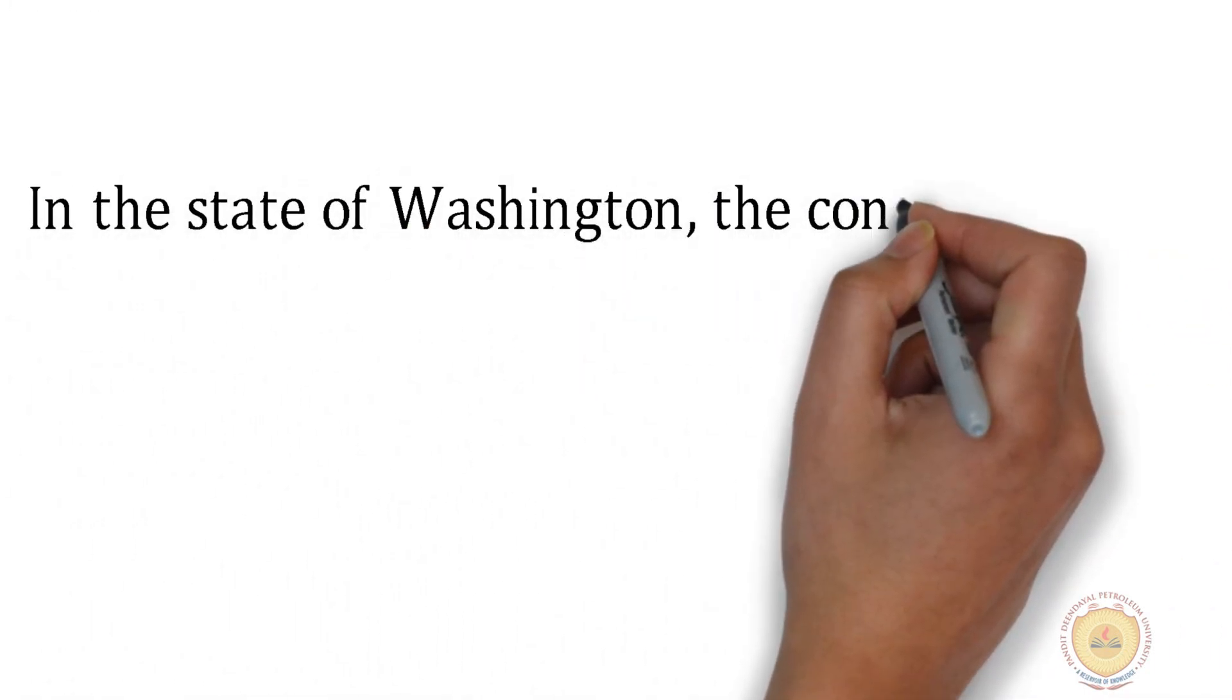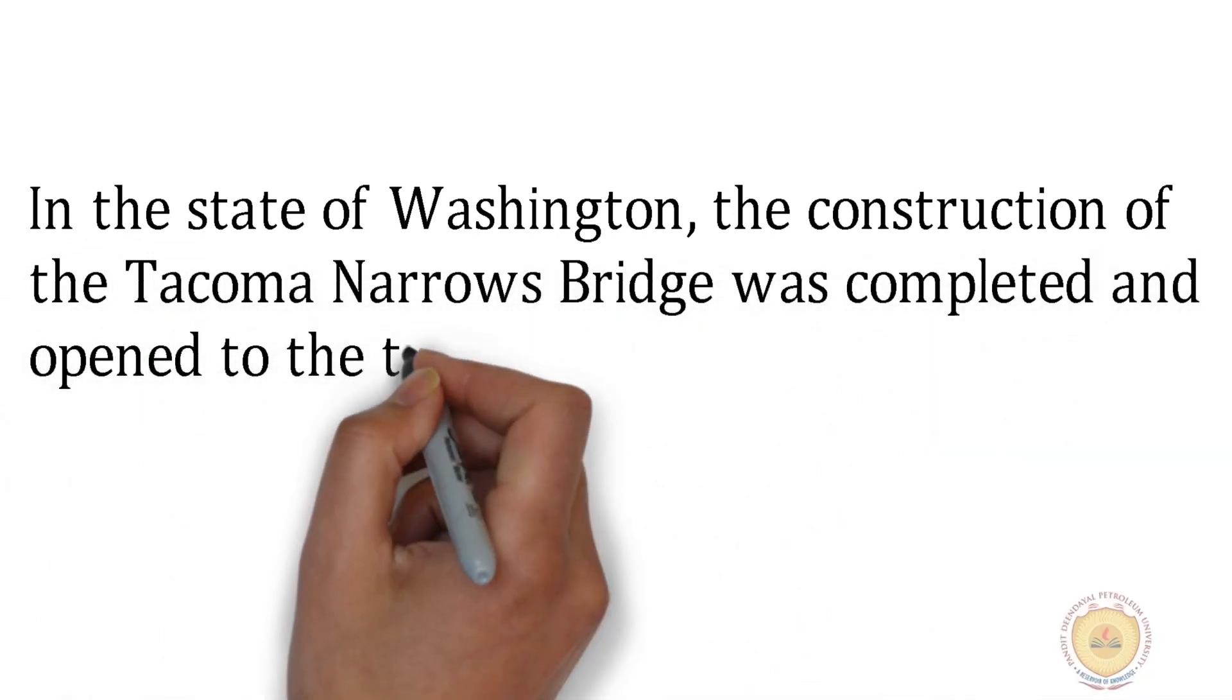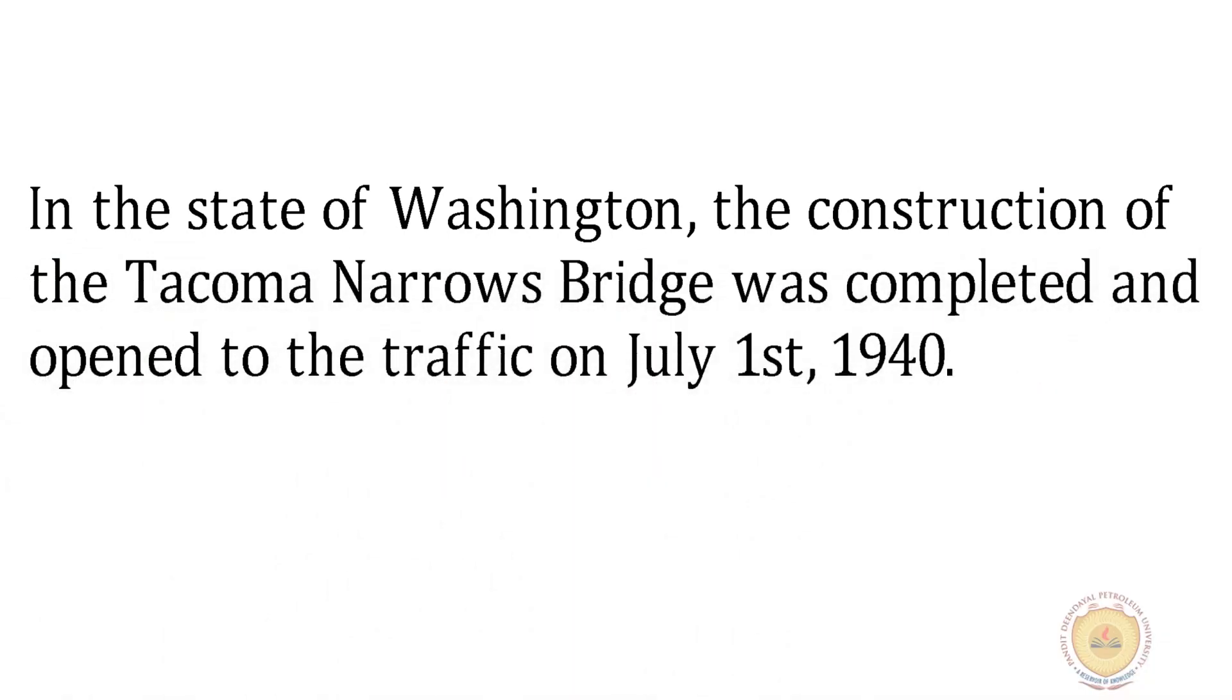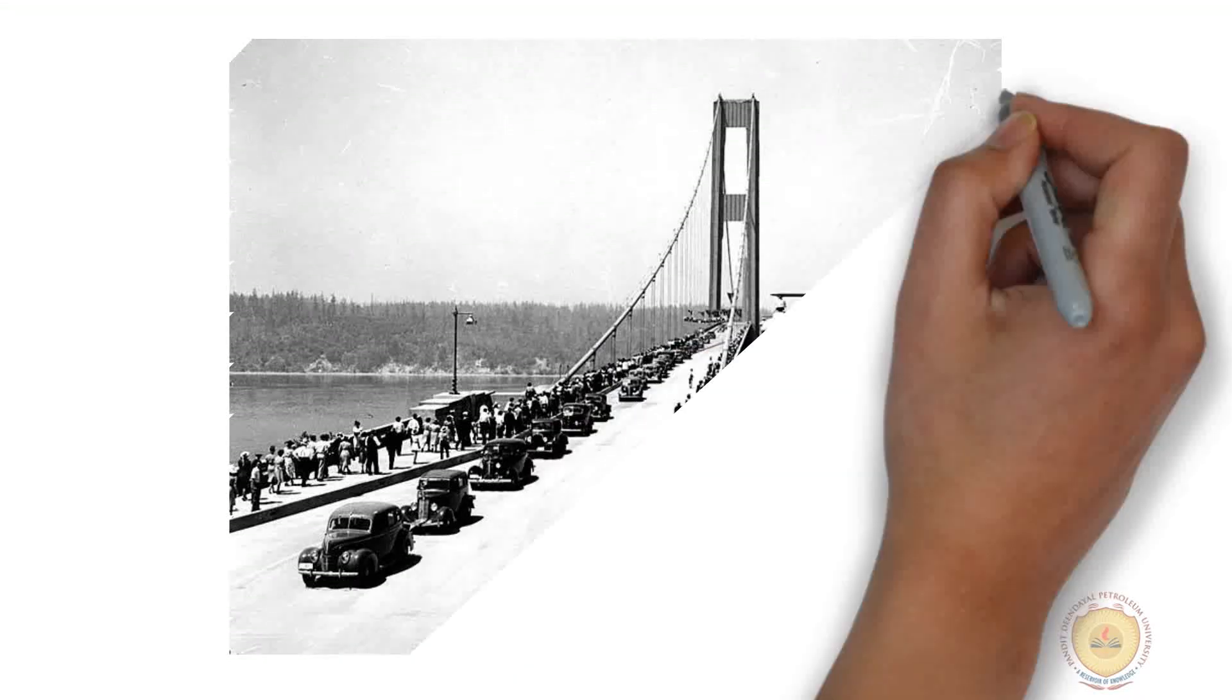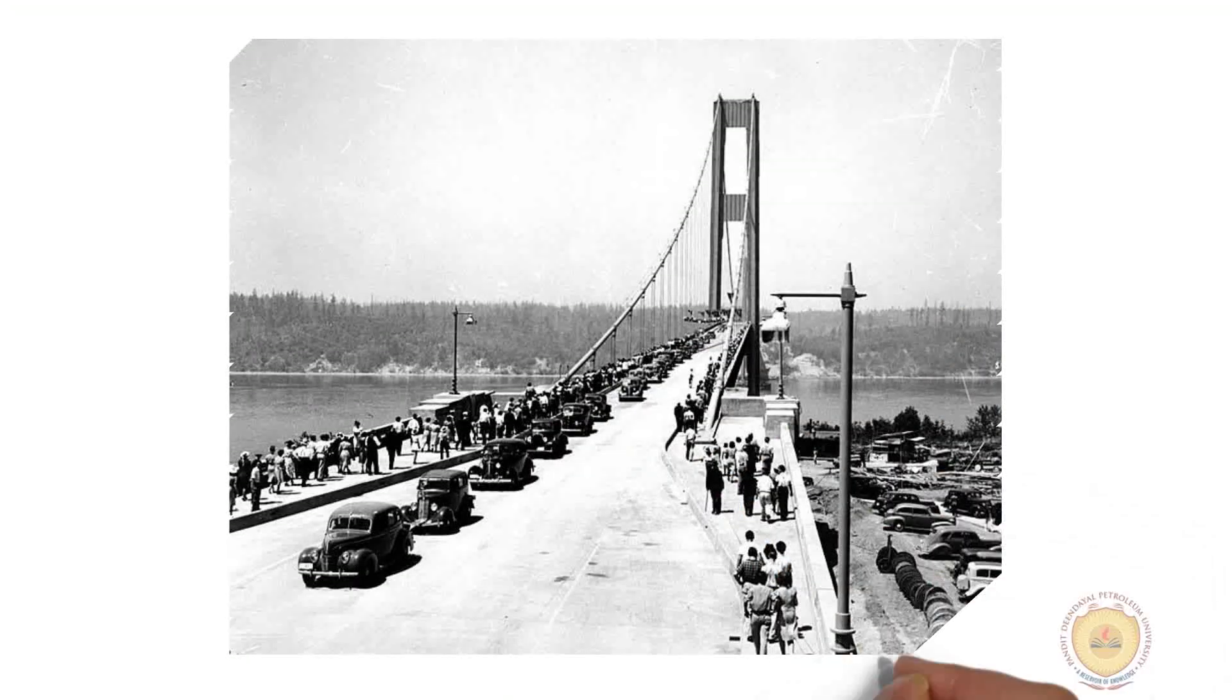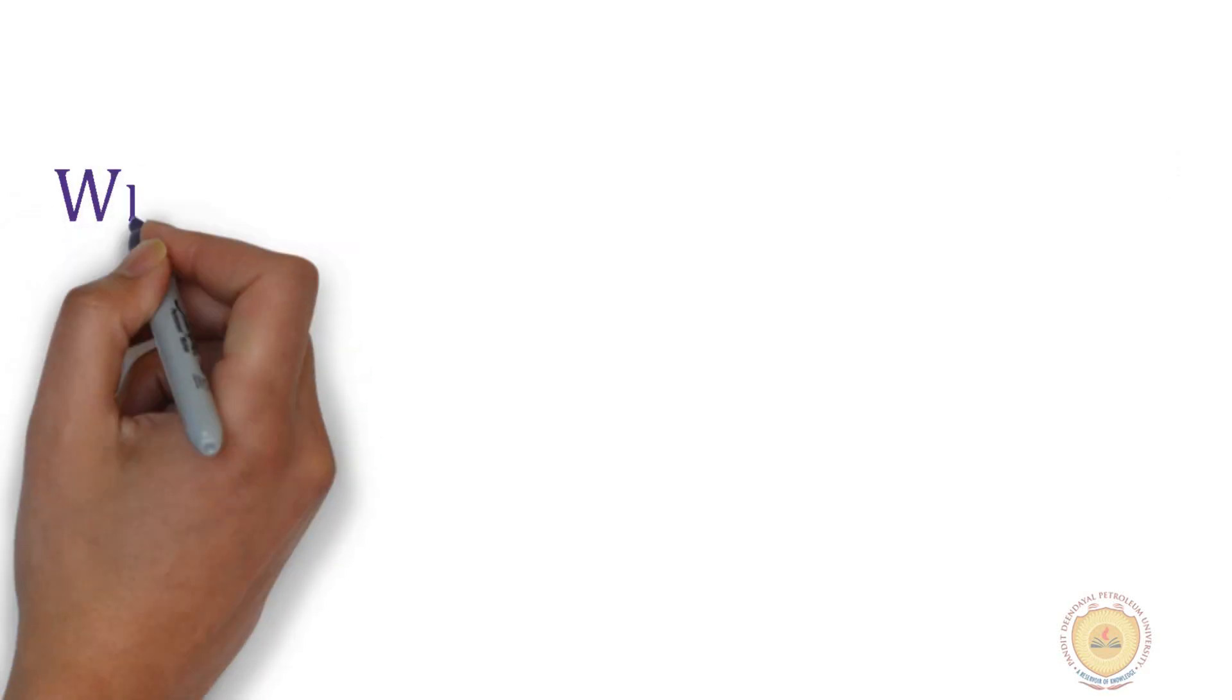In the state of Washington, the construction of the Tacoma Narrows bridge was completed and opened to traffic on July 1, 1940. You can see this image of the grand opening ceremony of this bridge. More than 1000 people were there.